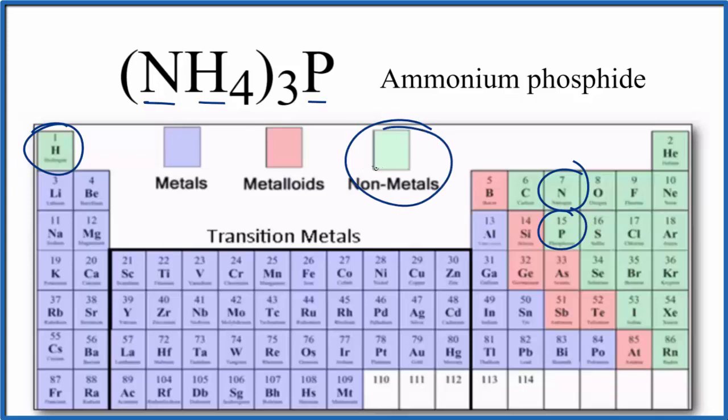So when we have all nonmetals we're expecting that we would have a covalent or molecular compound, but that's not the case with ammonium phosphide.